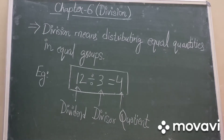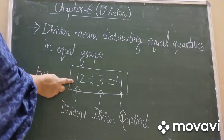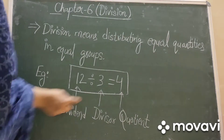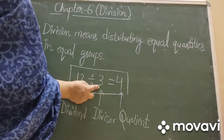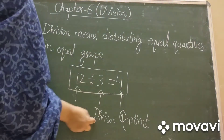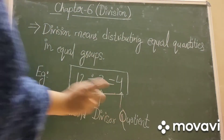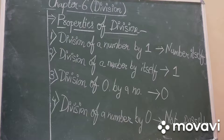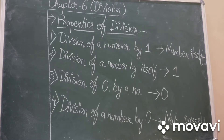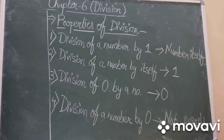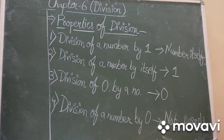Abhi tak ke liye aap sirf ye yaad rakhiye ki jisse divide karte hai, that is dividend. Jisse divide ho raha hai, that is divisor, and jo answer aa raha hai, that is your quotient. Now there are some important properties of division. Let's understand them one by one.